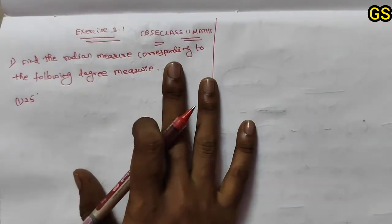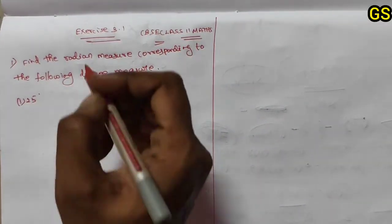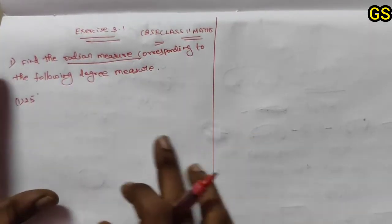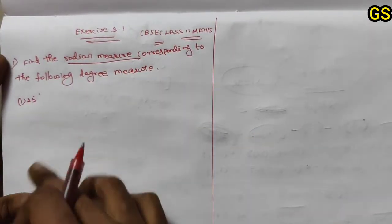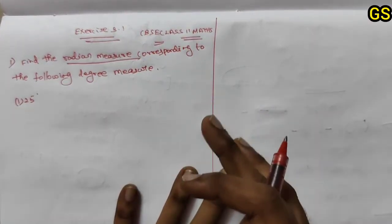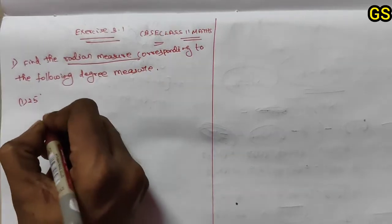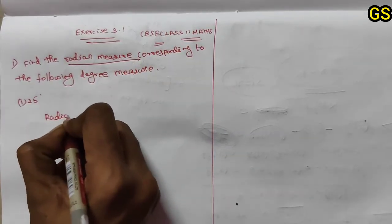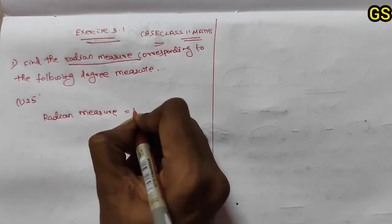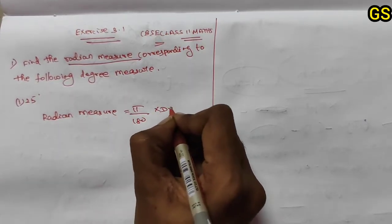Hi friends, welcome to CBC Class 11. Exercise 3.1, first problem solution: find the radian measure. The radian measure is equal to pi by 180 into degree measure.